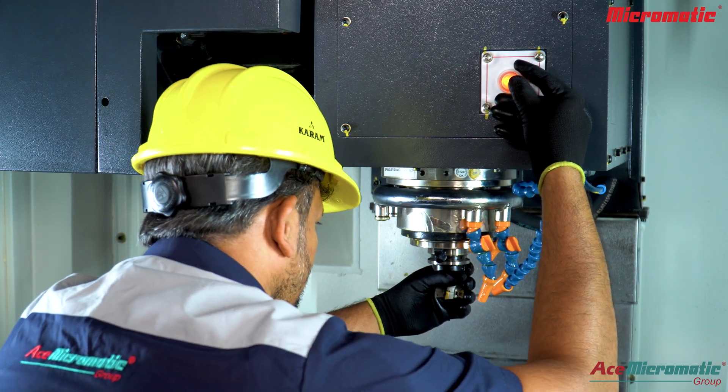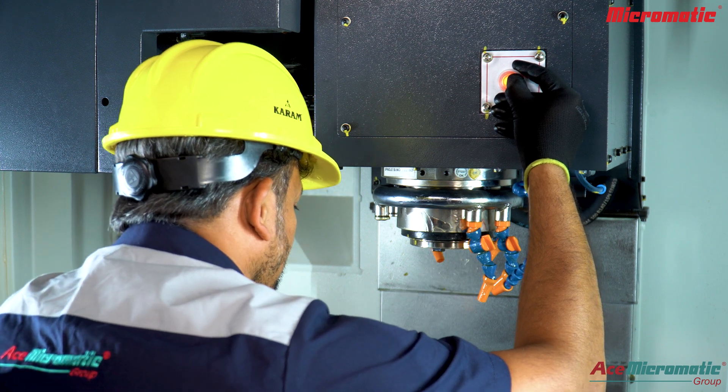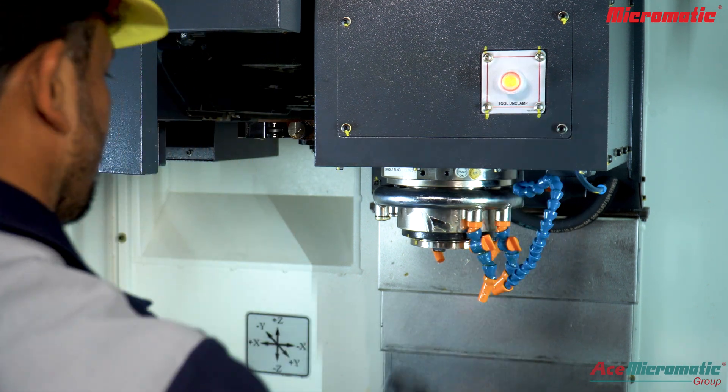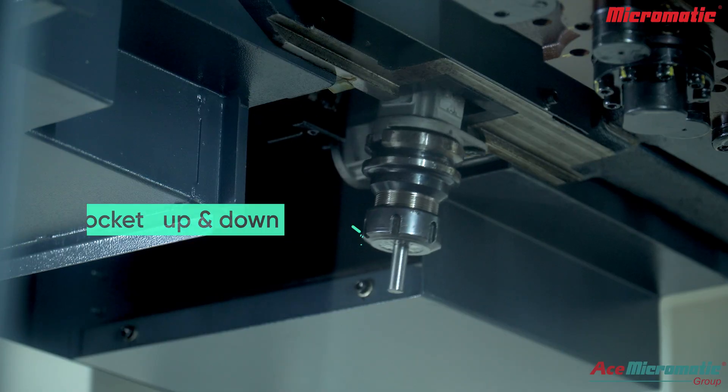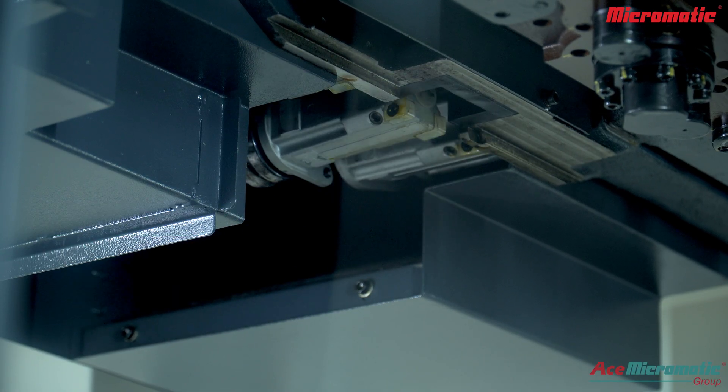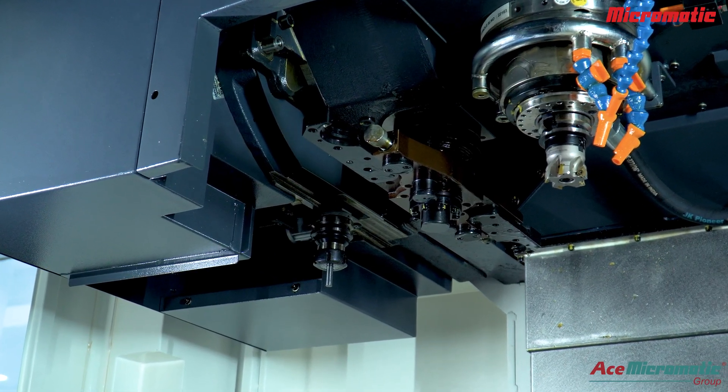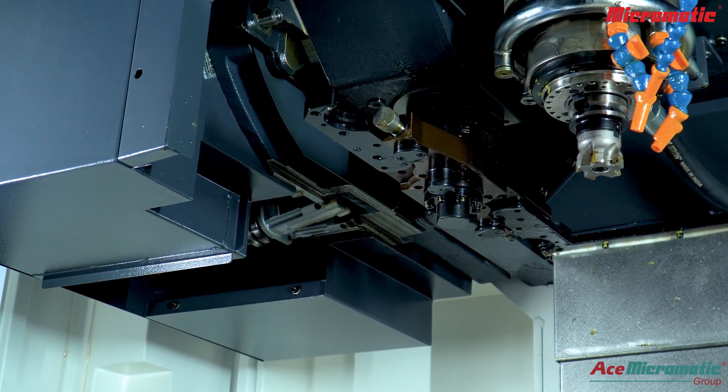Compressed air is specifically used for spindle taper cleaning and tool declamping, allowing quick and reliable tool swaps. The pocket up and down motion is usually controlled by the machine's pneumatic system. When a tool change is commanded, compressed air activates the mechanism that tilts the tool pocket.